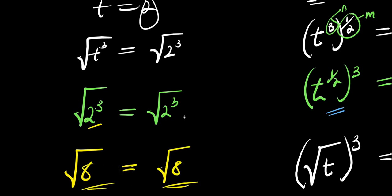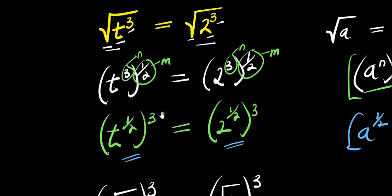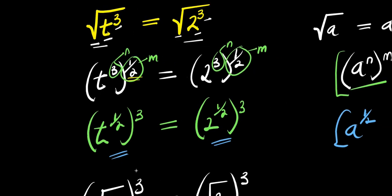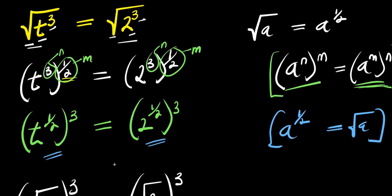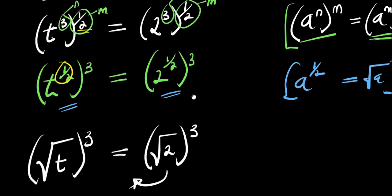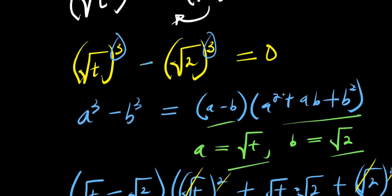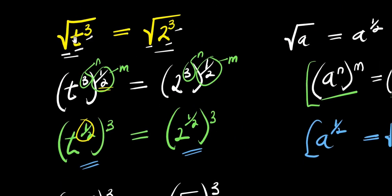The most interesting aspect of this problem is expressing the square root in terms of the exponent one over two. From there, you apply the power of a power rule and move the one over two inside. Then you take the square root and expand using the difference of cubes identity. After expanding, you solve each individual equation by equating them to zero. That is a quick review of what we did. Thank you and goodbye.